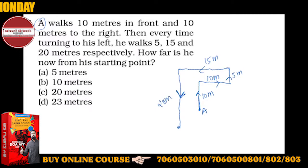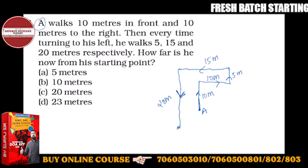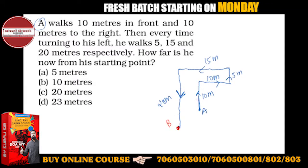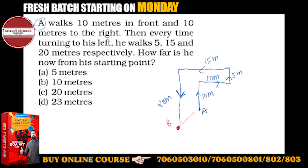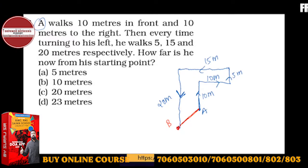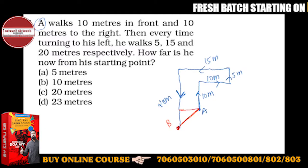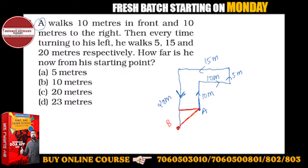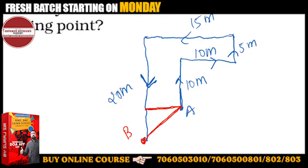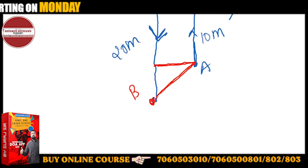This is his final position — okay, this is the final position, it is B. How far is he now from his starting point? This distance — again a right-angle triangle — you can easily identify this distance.